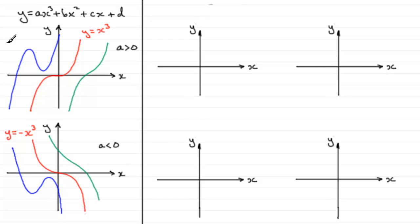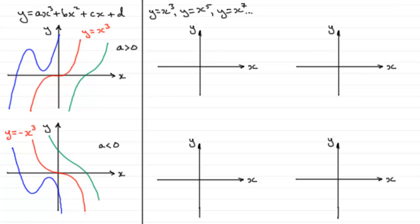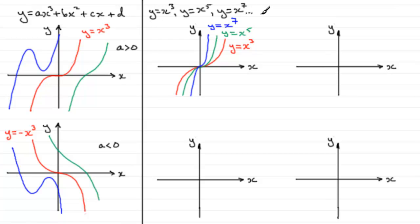Now I want to extend this idea to other functions. We're going to look at y equals x cubed, y equals x to the power 5, and y equals x to the power 7, where the power is a positive odd integer. We've already seen what y equals x cubed looks like. If we look at y equals x to the power 5, you get much the same kind of shape, only steeper. And y equals x to the power 7 is again the same type of shape, but steeper still. This goes on for higher powers.